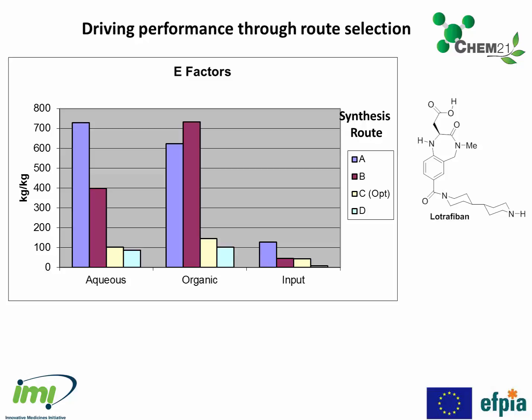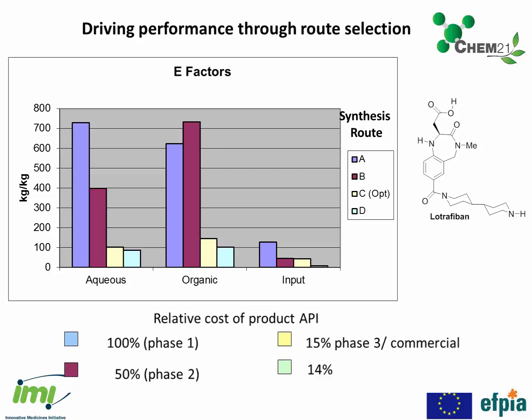Here we'll look at some of the positive metrics gained by changing the synthetic route. The data shown are from four routes used to make the API sorafenib, shown on the right. Routes A to D are shown, and what you can see are the E-factors — the kilograms of materials used to make one kilo of product. These four routes were aligned with the development phases of the compound. We can see dramatic falls in the use of process water, solvents, and input materials across the four routes.